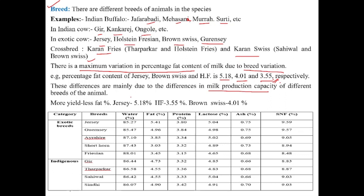Different breeds have different milk-yielding capacities, and these differences are observed in the composition of milk. More yield means less fat percentage. Among Jersey, Holstein Friesian, and Brown Swiss, Holstein Friesian gives the highest yield and therefore has a lower fat percentage, whereas Jersey gives the least yield and therefore has a higher fat percentage.